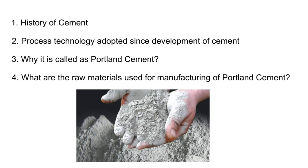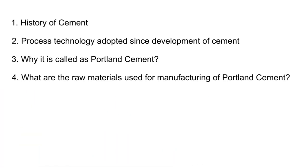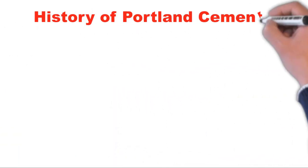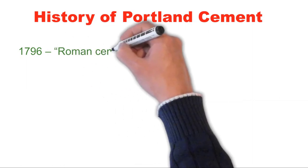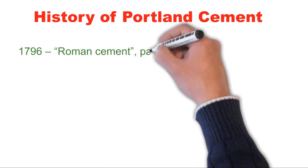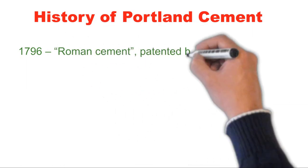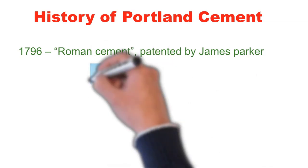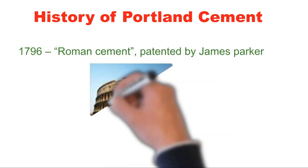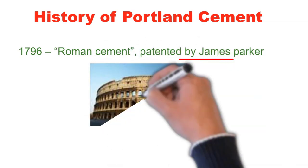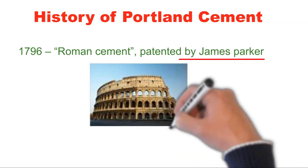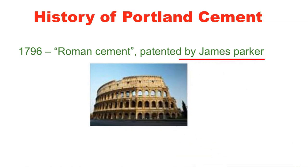First, let's look at the history of Portland cement. Based on the literature available, till the 16th century most of the cement used in construction is called Roman cement. In 1796, James Parker patented this cement called Roman cement. The Roman Colosseum, which is intact even now, was constructed using Roman cement.